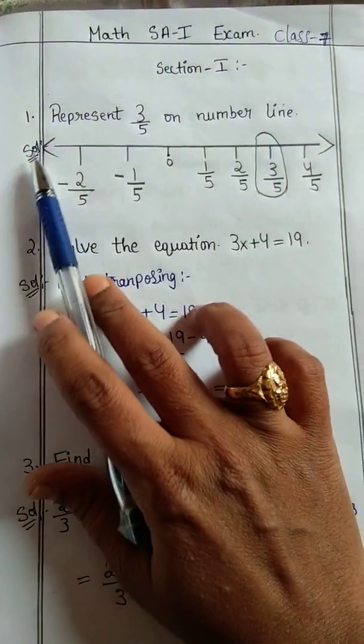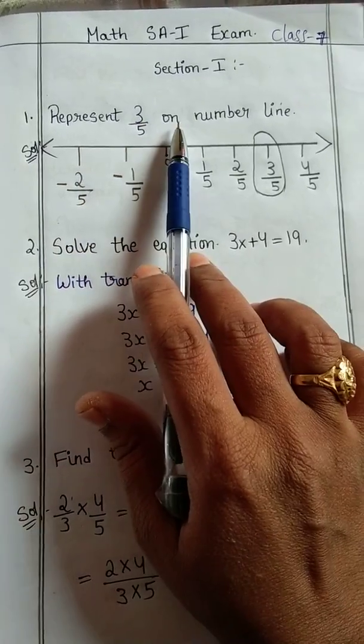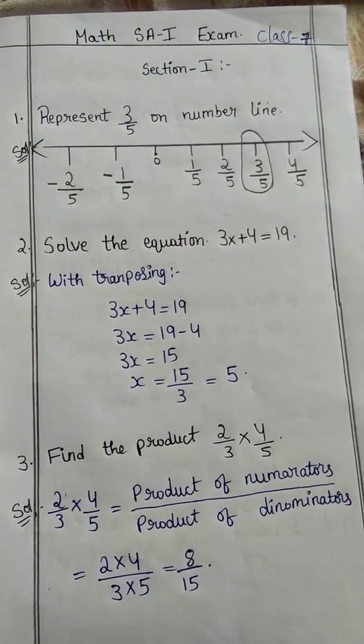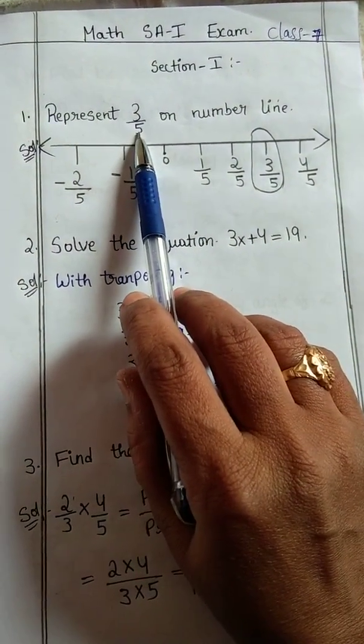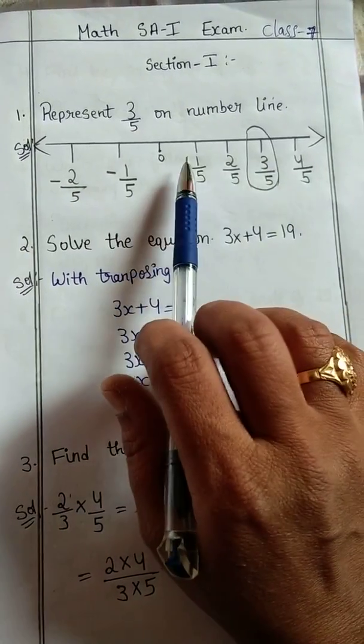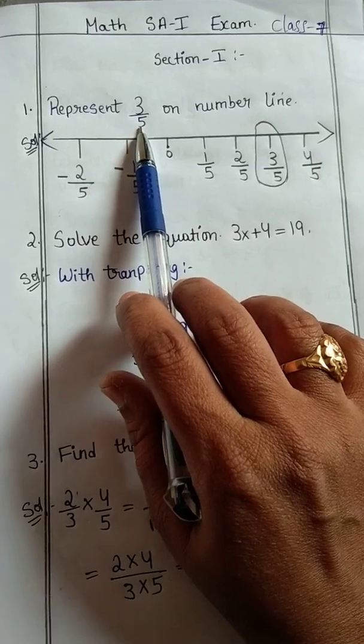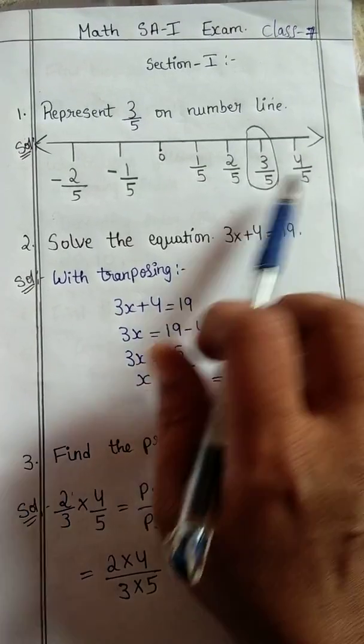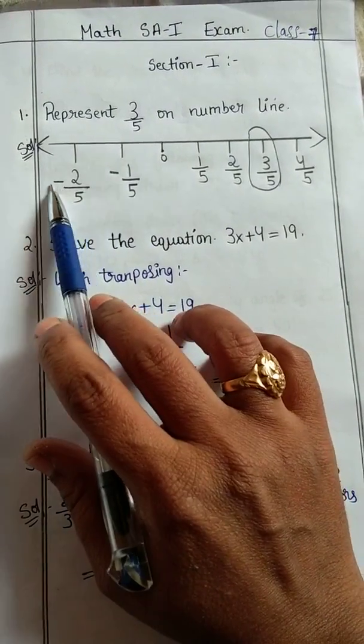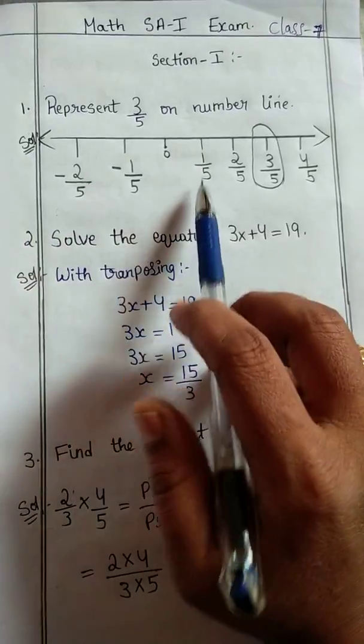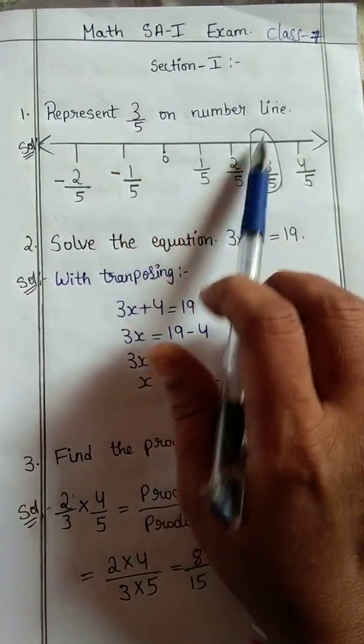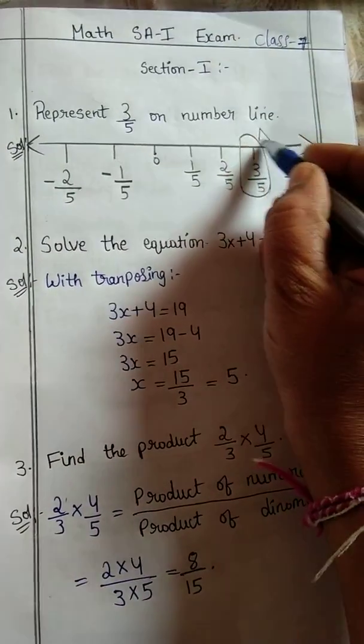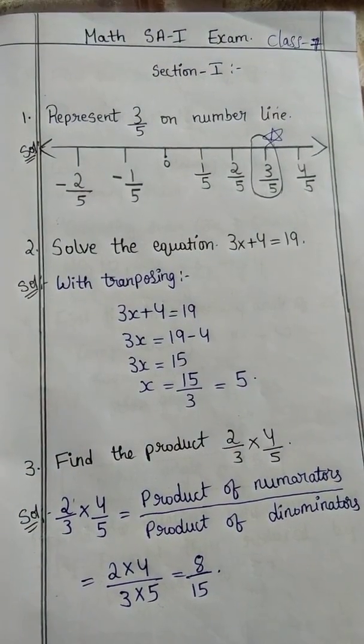Section 1. First question: represent 3 by 5 on number line. How to take the numbers on the number line depends on the denominator. Here denominator 5 is there, so 0, then 1 by 5, 2 by 5, 3 by 5, 4 by 5 and so on. Here left side minus 1 by 5, minus 2 by 5 up to so on. Now 3 by 5, where it is there on the number line, you can make it as a circle. Like this we can represent 3 by 5 on a number line.